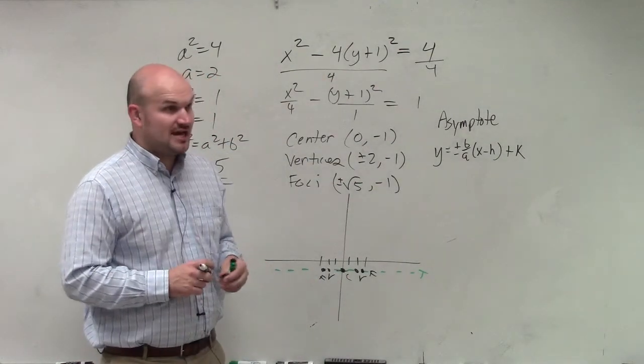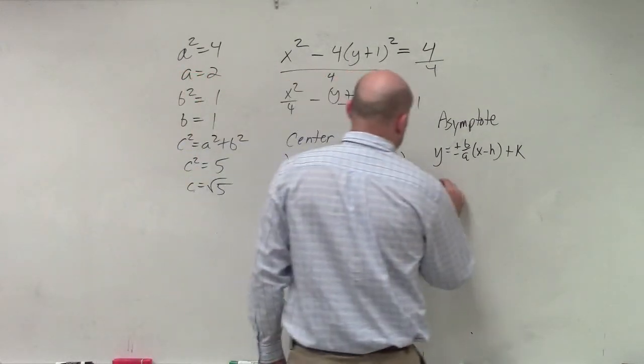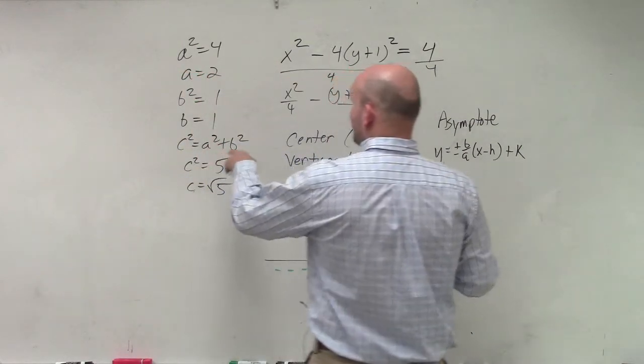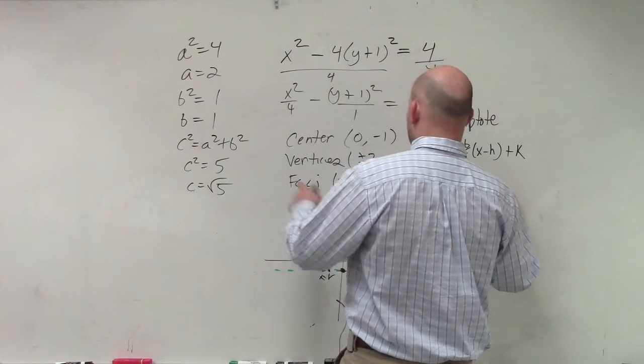y equals plus or minus b over a times x minus h plus k. Now do we have a, b, h, and k? Yeah. So y equals plus or minus b over a, which is 1 half, times x plus k, which is minus 1.